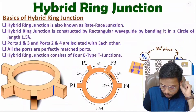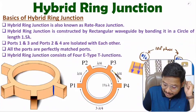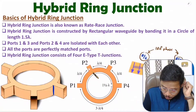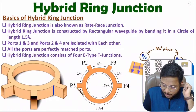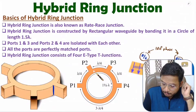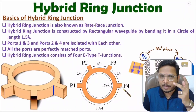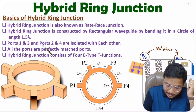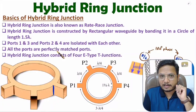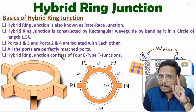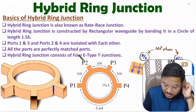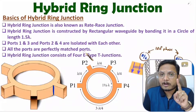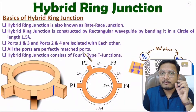Port 1 and port 3 are isolated with each other, and port 2 and port 4 are also isolated with each other. If you give input at port 1, output at port 3 will be zero, and vice versa. Similarly, input at port 2 gives zero output at port 4. Additionally, all ports are perfectly matched ports, meaning return loss at all four ports is zero.